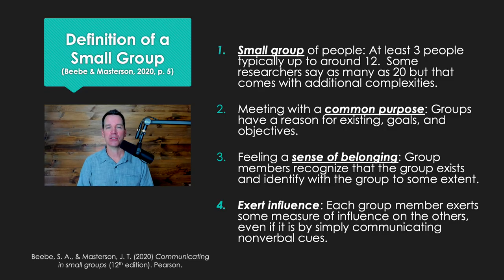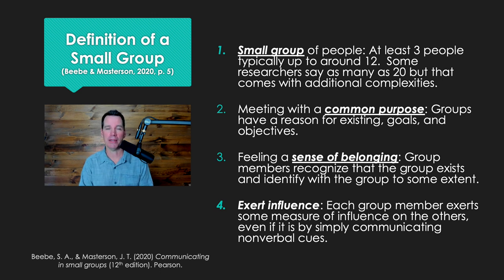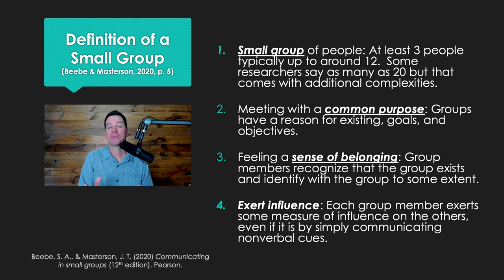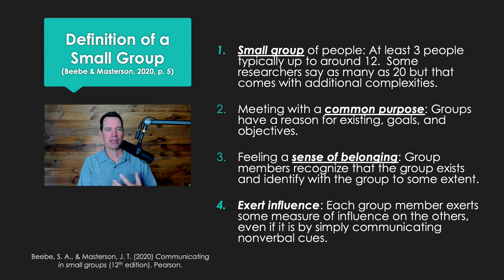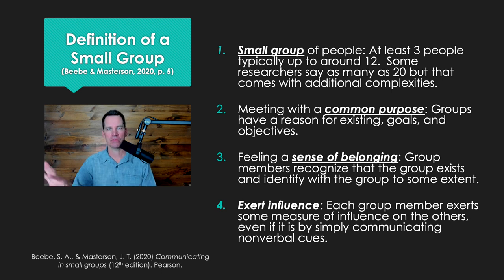A small group defined is a group of at least three people — it has to be more than two. Two is a dyad. It becomes a group once you have three people, and it goes up to about 12 people. Three to 12 is an agreed upon number for what counts as a small group. Some people say you can have as many as 20 people and still call it a small group, but that's a little bit debatable. If you have ever been in a group that gets larger than 12, participating becomes more difficult — there are additional complexities. So three to 12 is a really good safe bet.